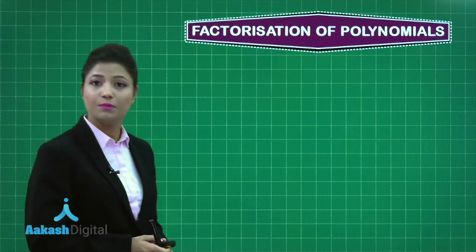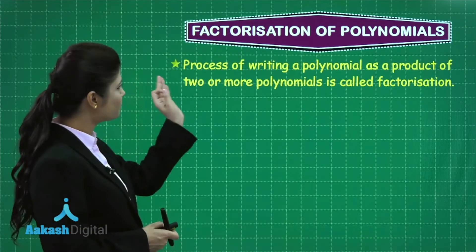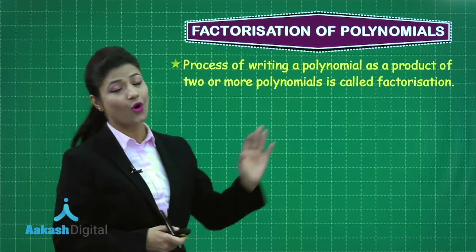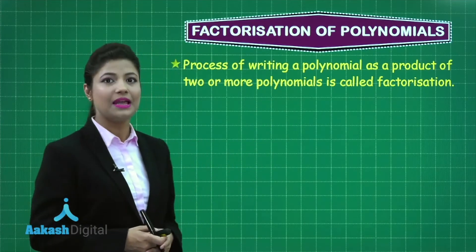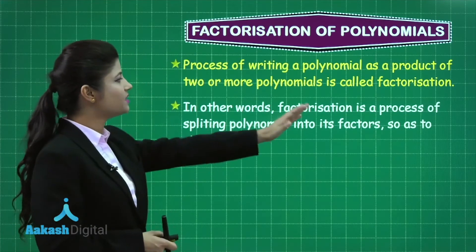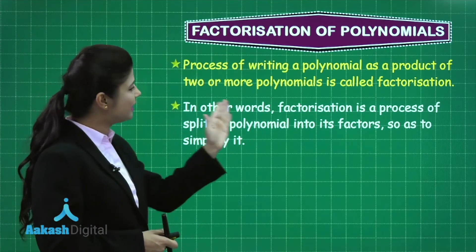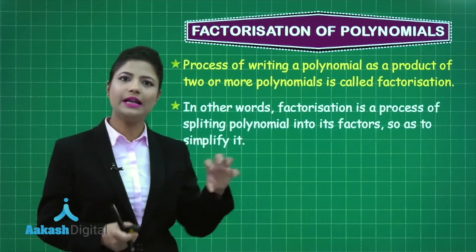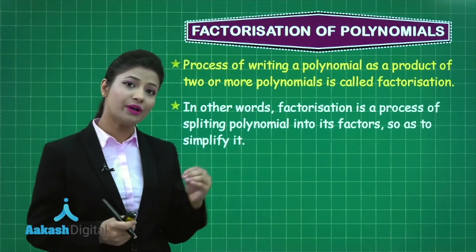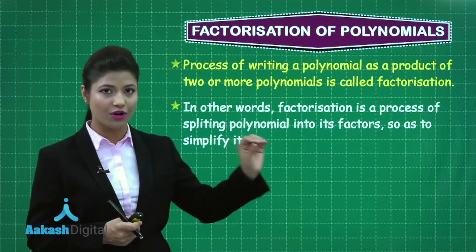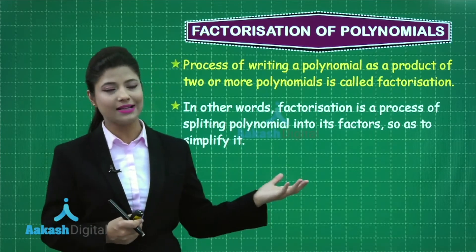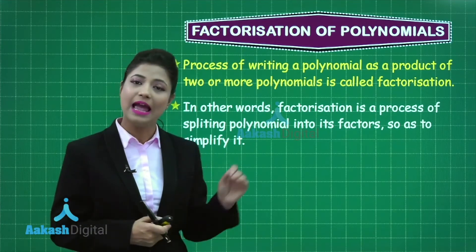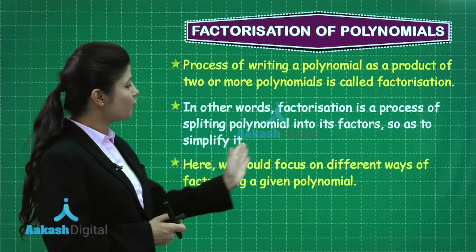The process of writing a polynomial as a product of two or more polynomials is called factorization. In other words, factorization is the process of splitting a polynomial into its factors so as to simplify it. If you express a polynomial of higher degree as a product of smaller polynomials of lesser degree, that is called factorization.